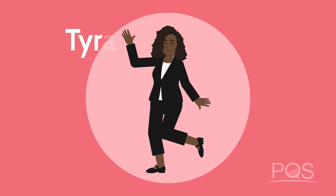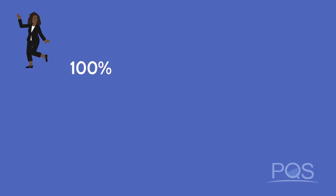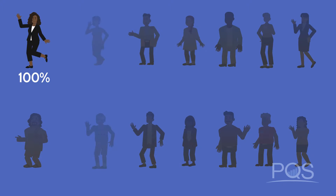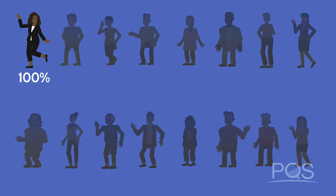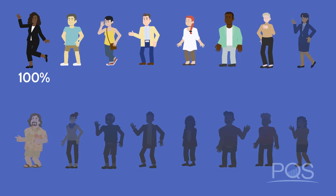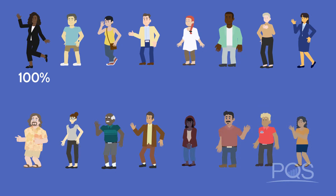Let me introduce you to Tyra. She picks up her diabetes medication on time, every time — her adherence score is 100%. Tyra is one of 16 individuals in our sample population, all taking the same class of diabetes medication. To see if our population as a whole is doing as well as Tyra, we need to crunch some numbers.